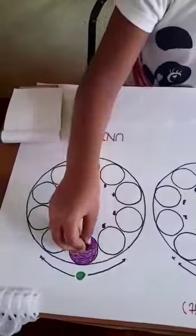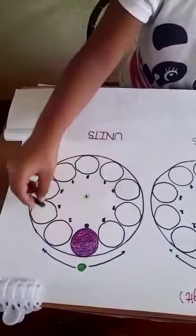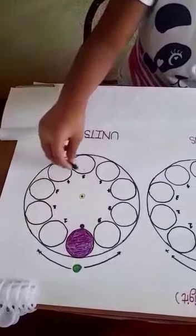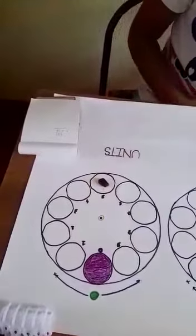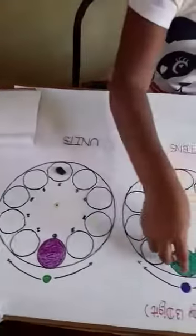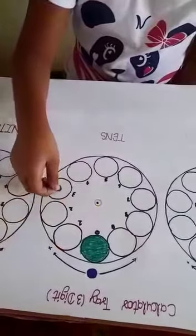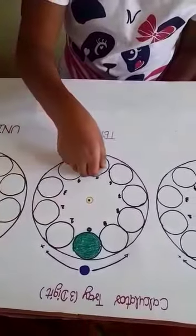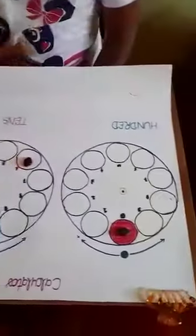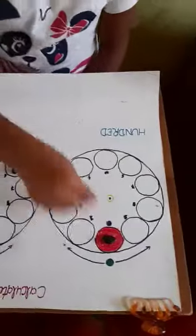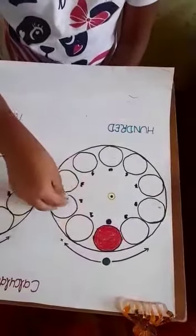First number is 5. We can count here. 1, 2, 3, 4, 5. Second number is 6. 1, 2, 3, 4, 5, 6. Third number is 3. 1, 2, 3.